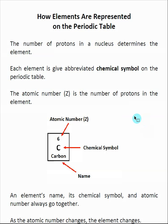On the periodic table, each element is given an abbreviated chemical symbol, and that's usually how we talk about the elements.